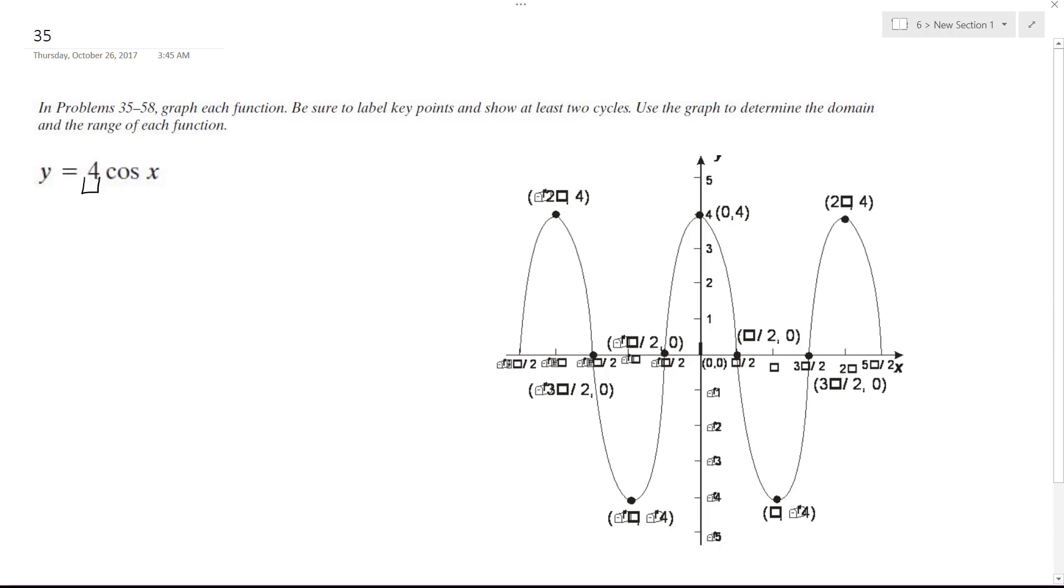If you look, the amplitude here is 4. The amplitude is from the top peak here to the midsection. Basically, it's half of the total height, so 0 to 4.